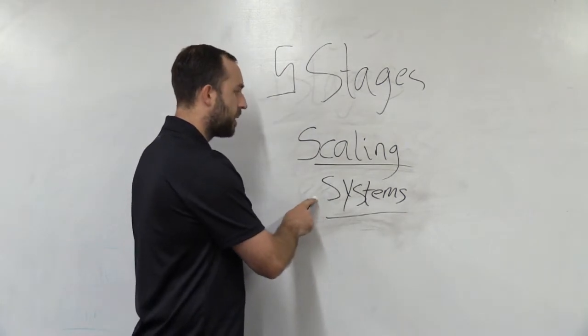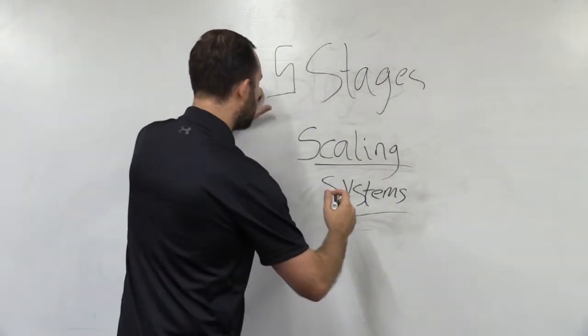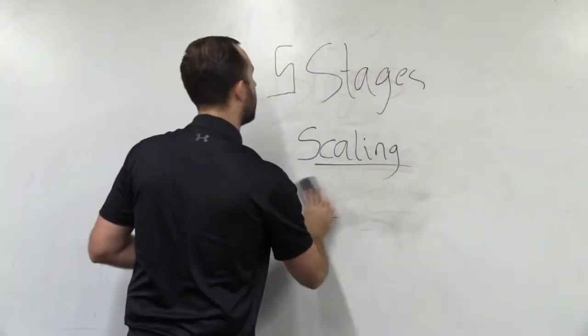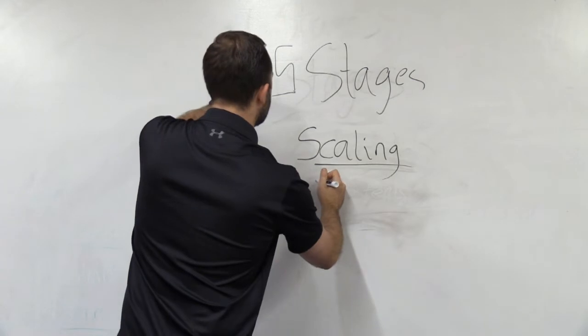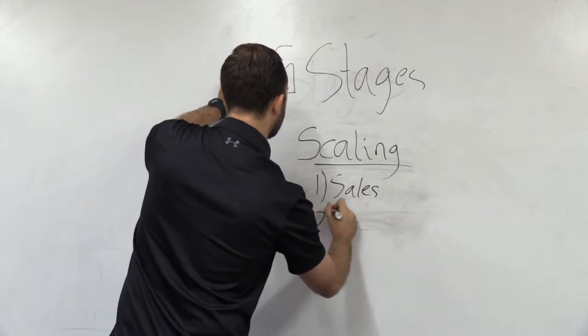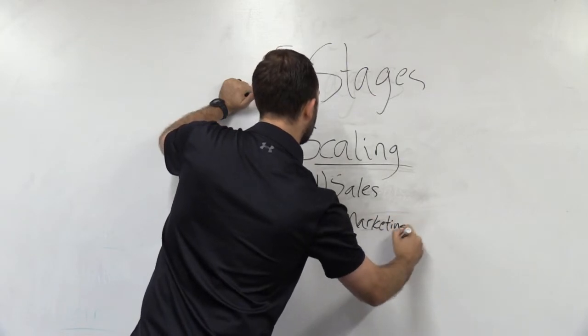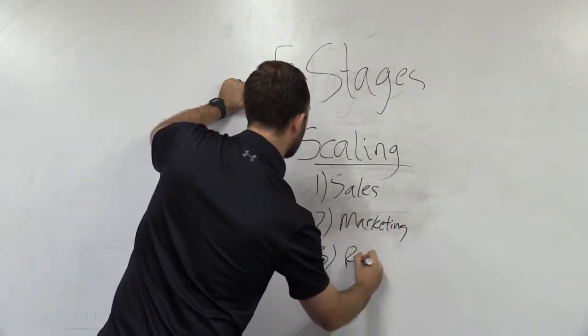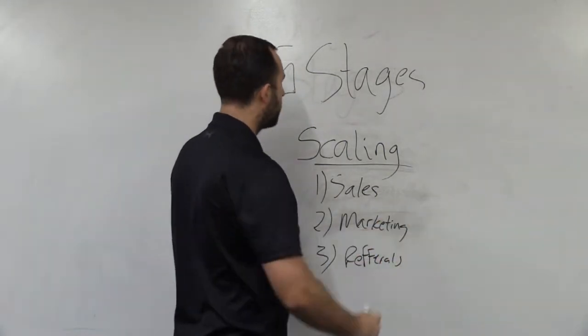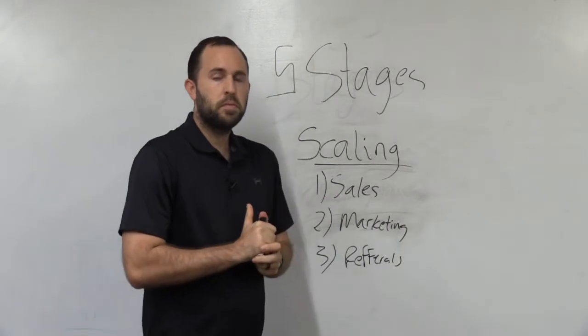And when we have systems in place, I'll give you three good examples of systems. I'm going to erase this real quick so you can actually see what I'm talking about. So the first system is sales. The second one is marketing. The third is referrals. And in my opinion, these are not in any order. I just labeled it that way.